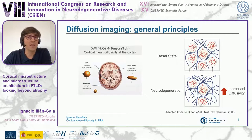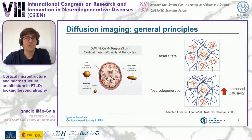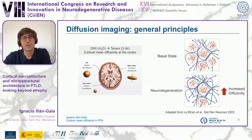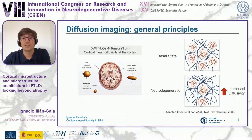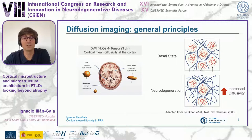Within imaging biomarkers, I will discuss diffusion-based imaging. These measures have tremendous potential to unveil the earliest cerebral changes that occur in neurodegenerative dementias. Diffusion-weighted sequences capture the movement of water molecules in our brain, and we can model this movement into a tensor that represents the three main directions of water movement.